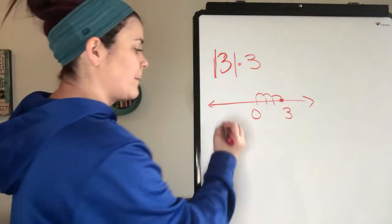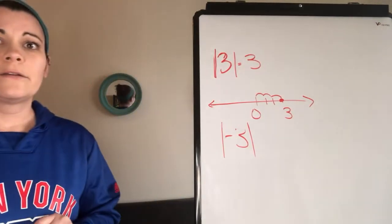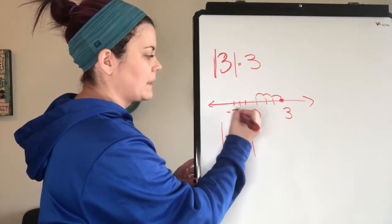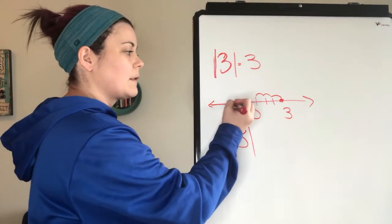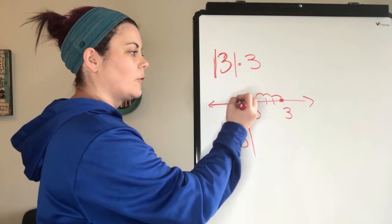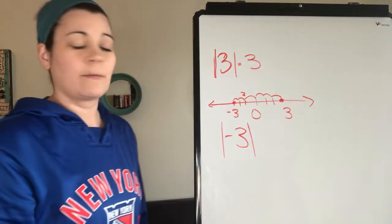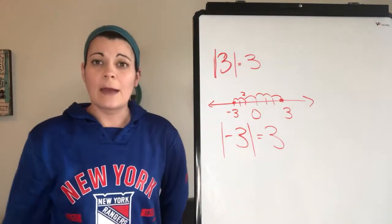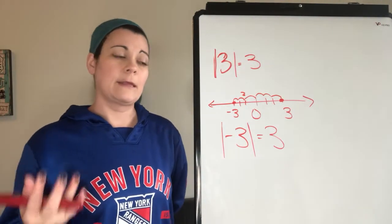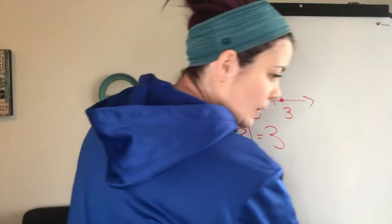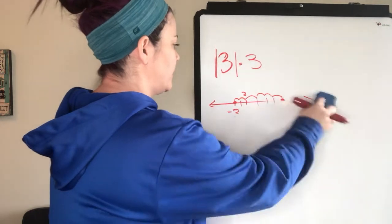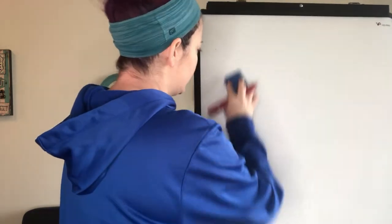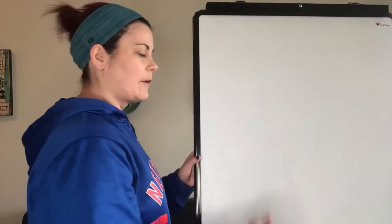Now, what is the absolute value of negative 3? On a number line, negative 3 is also 1, 2, 3 spaces away from 0. So the absolute value of negative 3 is also 3. Again, absolute value is the number of spaces a number is from 0.